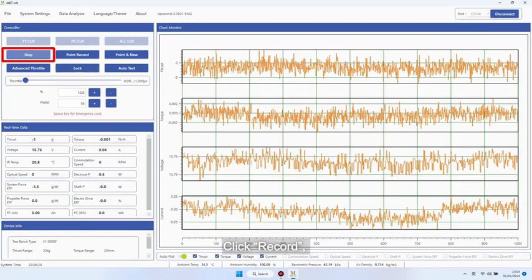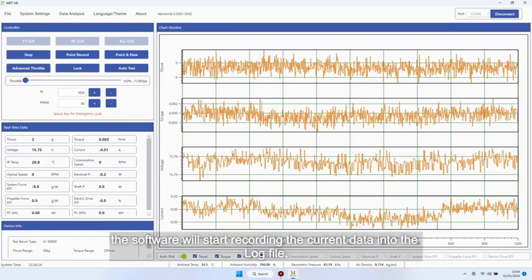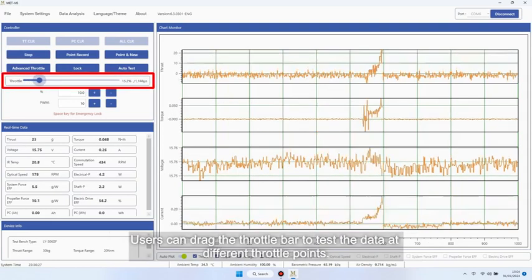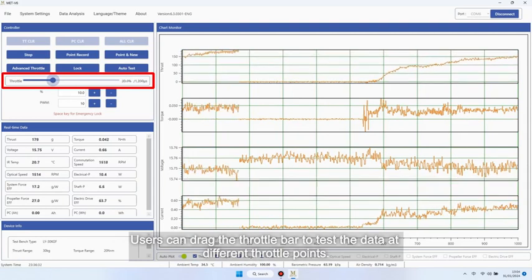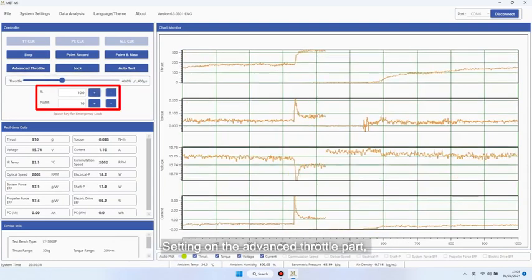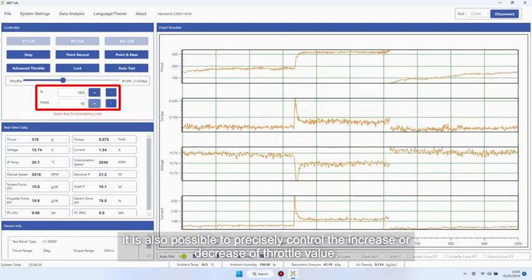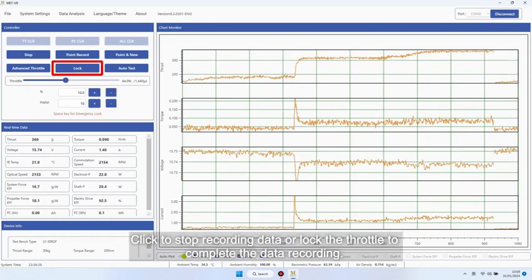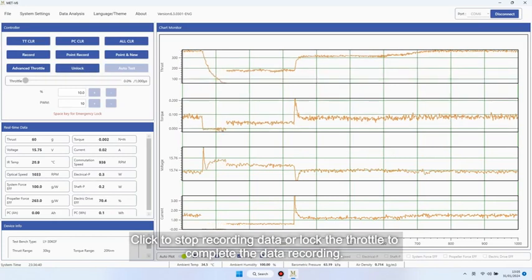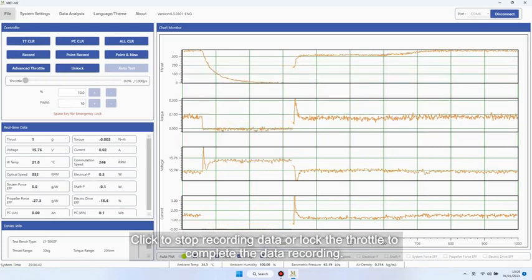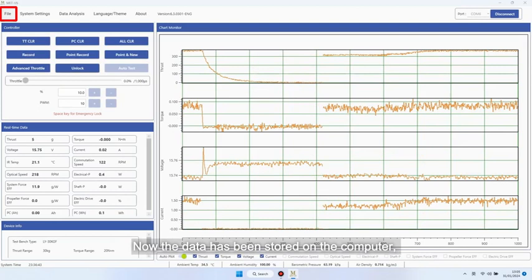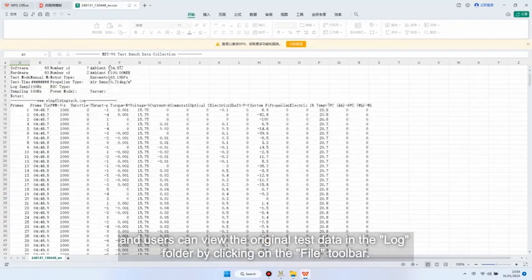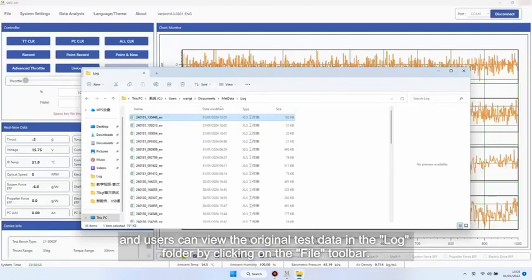Click Record. The software will start recording the current data into the log file. Users can drag the throttle bar to test the data at different throttle points. Setting on the advanced throttle part, it is also possible to precisely control the increase or decrease of throttle value. Click to stop recording data or lock the throttle to complete the data recording. Now the data has been stored on the computer, and users can view the original test data in the log folder by clicking on the file toolbar.